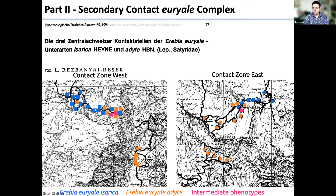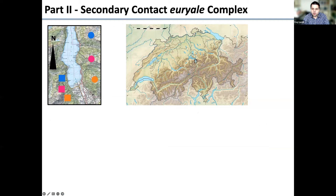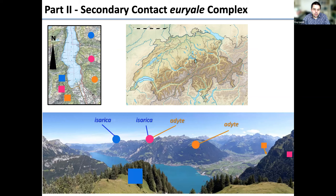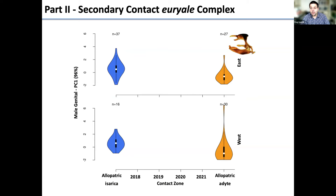In Switzerland, we have the western and eastern contact zones, and for each we sampled allopatric sites for isarica and adita. The western contact zone is spatially more connected, while the eastern one has valleys in between — likely less gene flow. In the field, the contact zone involves a steep mountain slope, making fieldwork challenging but interesting.